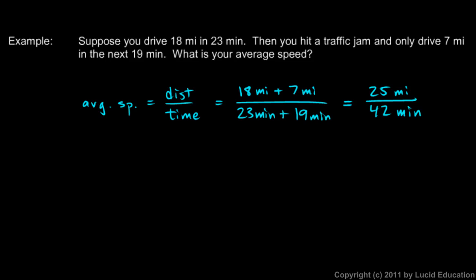So 25 divided by 42 comes out to approximately equal to, and this kind of wavy equal sign like that means approximately equal to, approximately equal to 0.6, and notice the units. So we have miles per minute, 0.6 miles per minute.